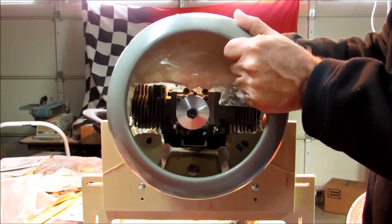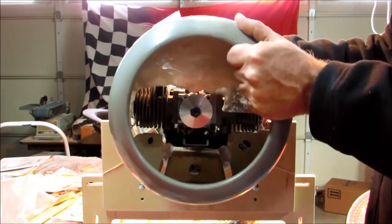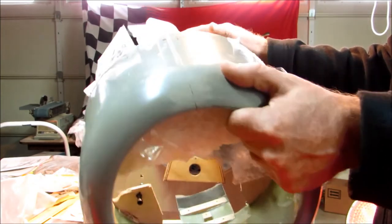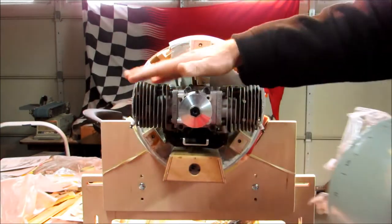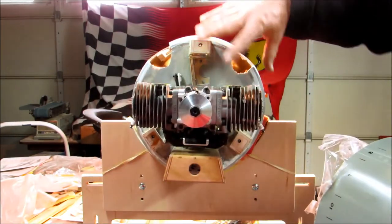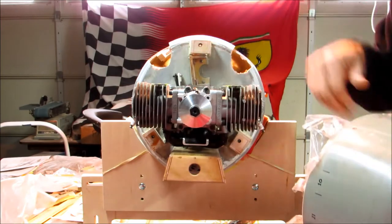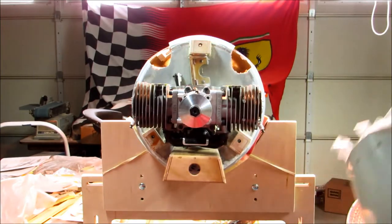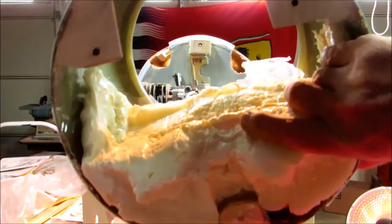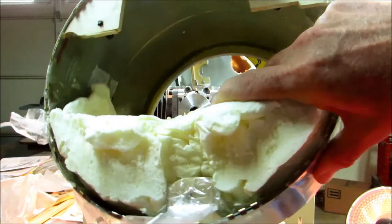But by wiggling everything I was able to get the whole thing to come off. I've removed the tape now that was on the engine and the firewall, and what I'm left with now is this big foam piece.